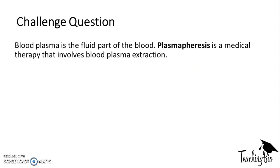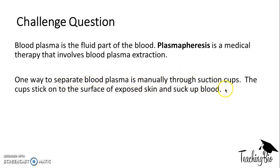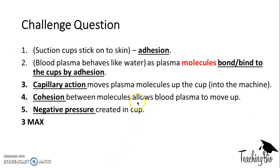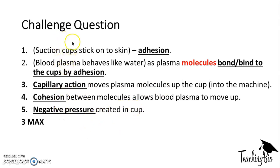Next is a challenge question. Blood plasma is the fluid part of the blood. Plasmapheresis is a medical therapy that involves blood plasma extraction. One way to separate blood plasma is manually through suction cups: the cups stick on the surface of exposed skin and suck up blood. Use your knowledge of water to explain how blood plasma is removed. The answer: the suction cups stick onto the skin — that's adhesion. Blood plasma behaves like water as it's the fluid part of the blood, and the plasma molecules bind to the cups by adhesion. Capillary action moves the plasma molecules up the cup into the plasmapheresis machine, and cohesion between plasma molecules allows plasma to move up. You also get negative pressure in the cups. Any three of these points would gain the three marks.